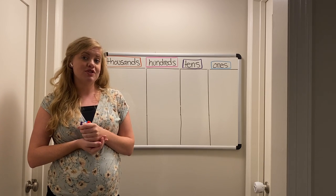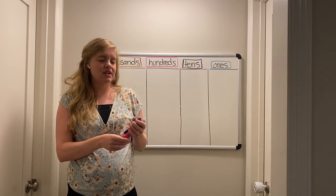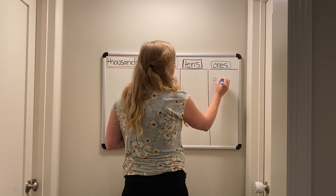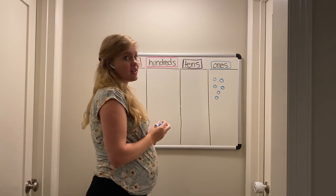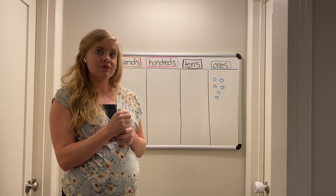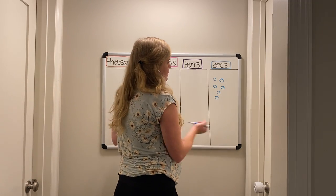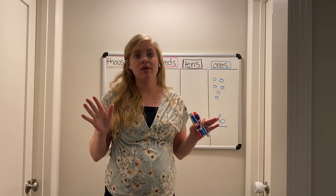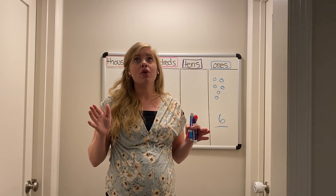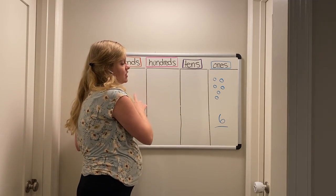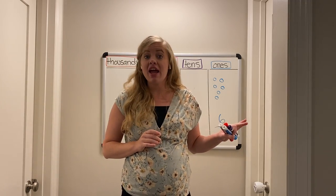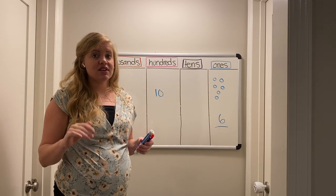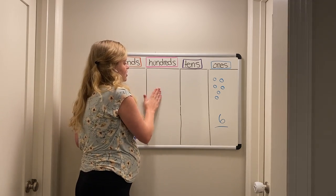So we're going to start in the ones place. You can choose whatever shape you want as long as it's easy to draw. If I have six ones, what number is that? That's right — it's six, we have six ones. Something really important: only one digit can go in each place value. A digit is a number one through nine, not ten, because ten has two digits.